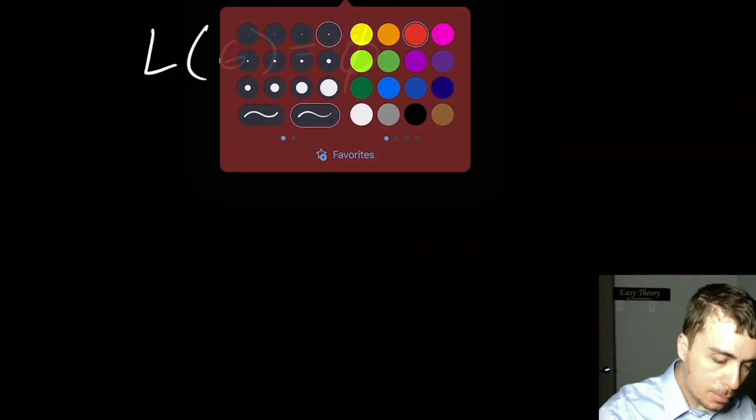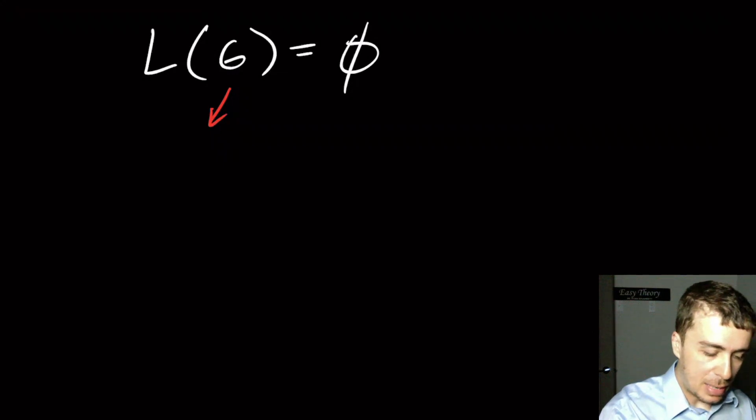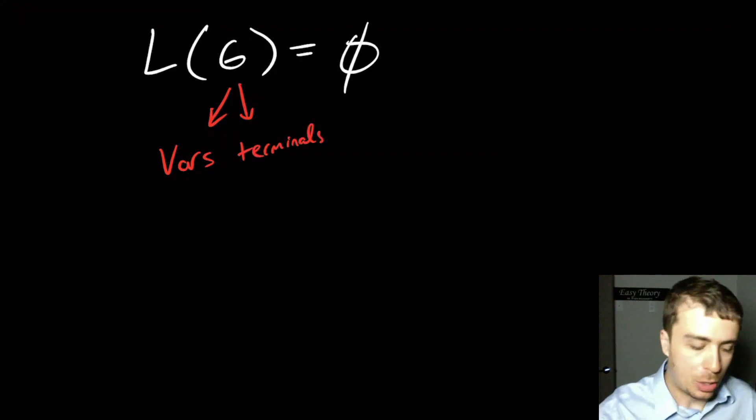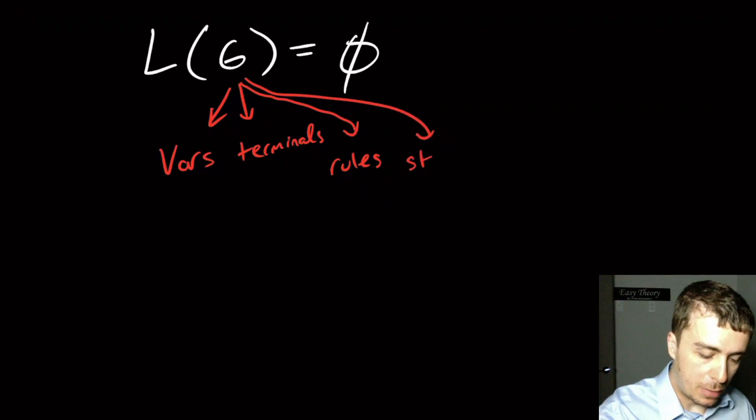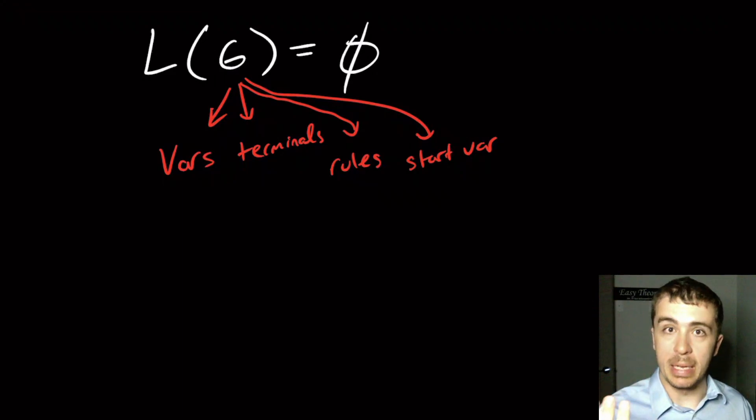Well, remember that every single grammar has to have four things. It has to have variables, it's got to have terminals, or you can call variables non-terminals, it just means the same thing. It's got to have rules, and it must have some start variable. It's got to have those four things in order to be a context-free grammar.